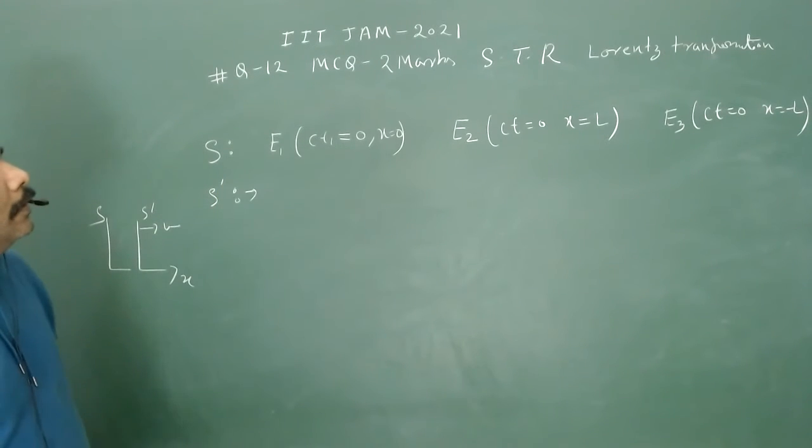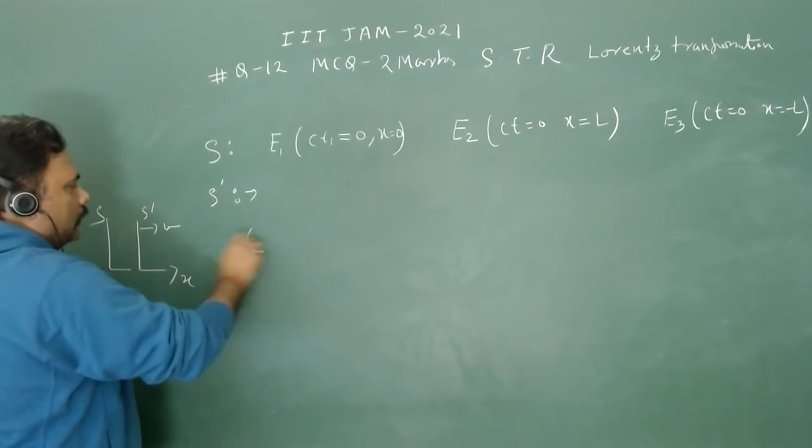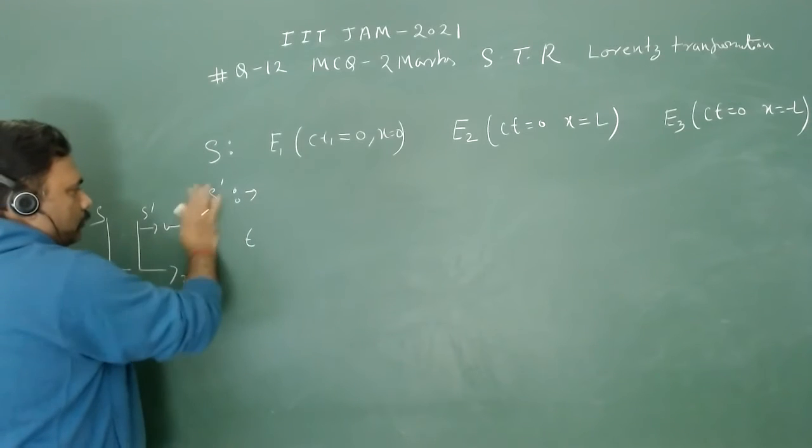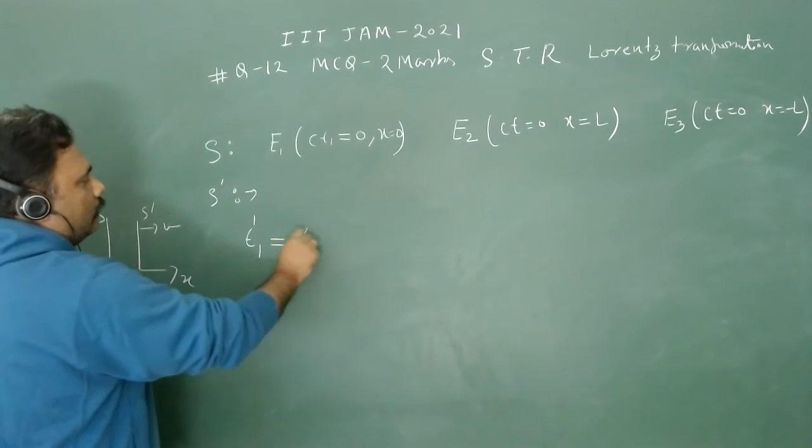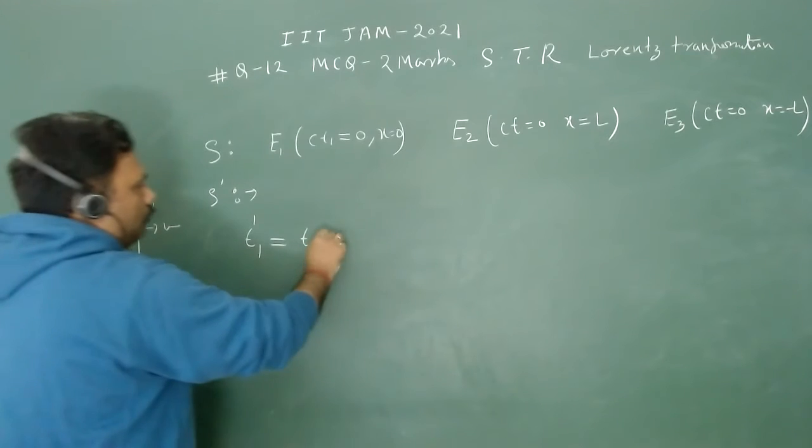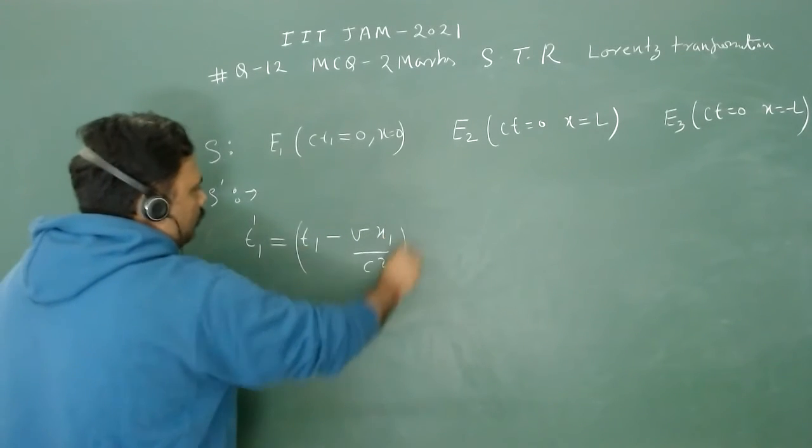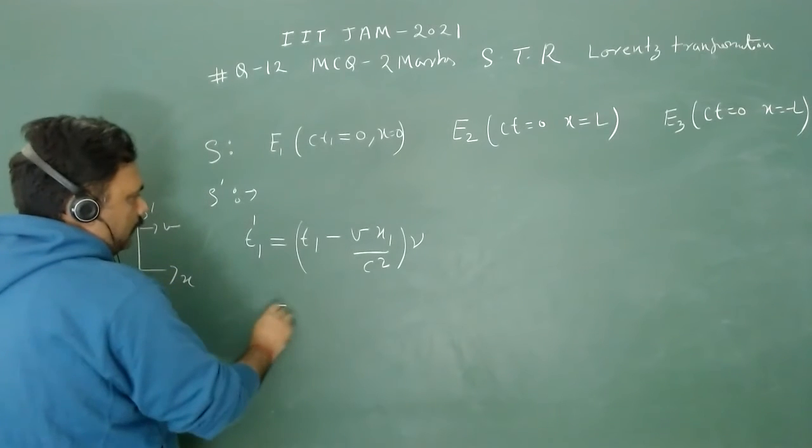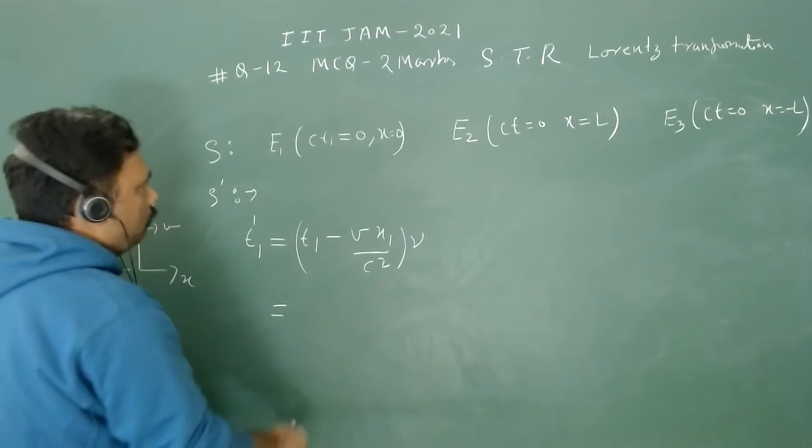Let's solve this problem with the help of Lorentz transformation. For the first event from S' frame, t1' = (t1 - vx1/c²)γ. I will put t1=0 and x1=0, so obviously this value is 0.